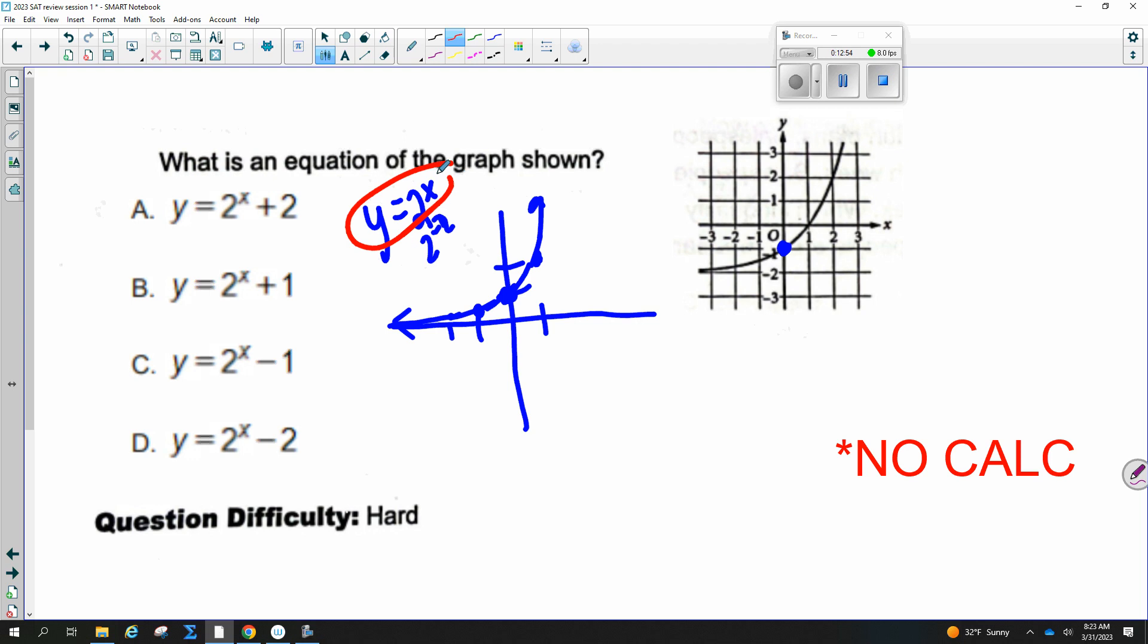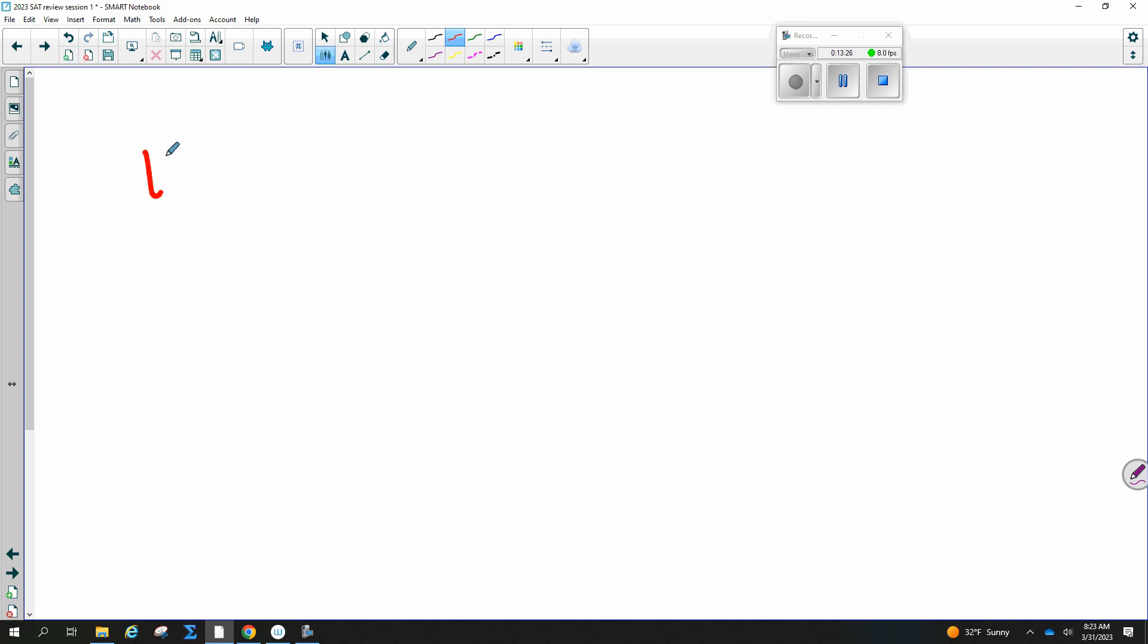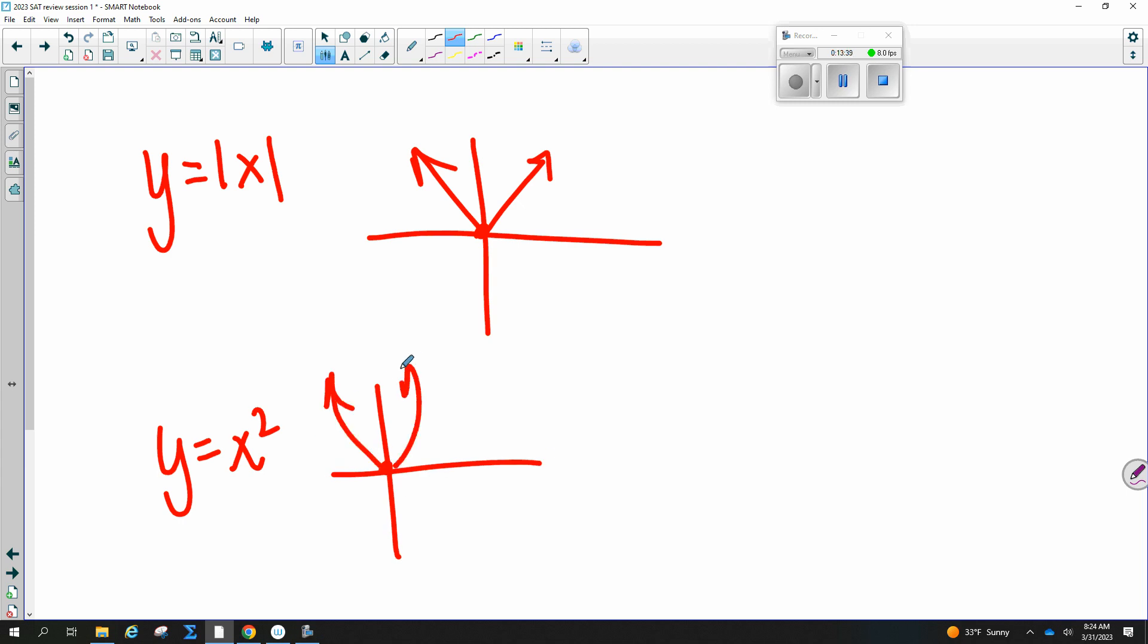What happened is I shifted it down 2. And so that one is the correct answer. I could also check this. Like when I plug in 0, anything to the 0 power is 1. 1 minus 2 is negative 1. I could plug in 1. So 2 to the first is 2 minus 2 is 1. And make sure all those points line up on that graph. You might want to know some of your exponentials. It's definitely helpful to know like how they shift. And so this graph for absolute value always makes a V. And this graph for the X squared graph always makes a parabola. Those are our parent graphs. You might want to review some of those. And then how do they shift?